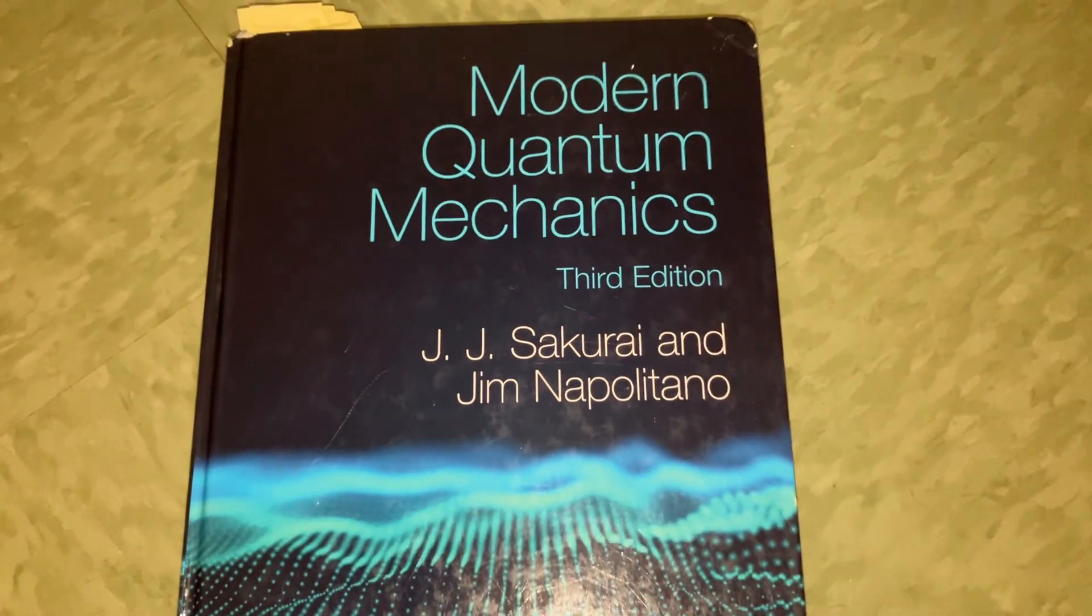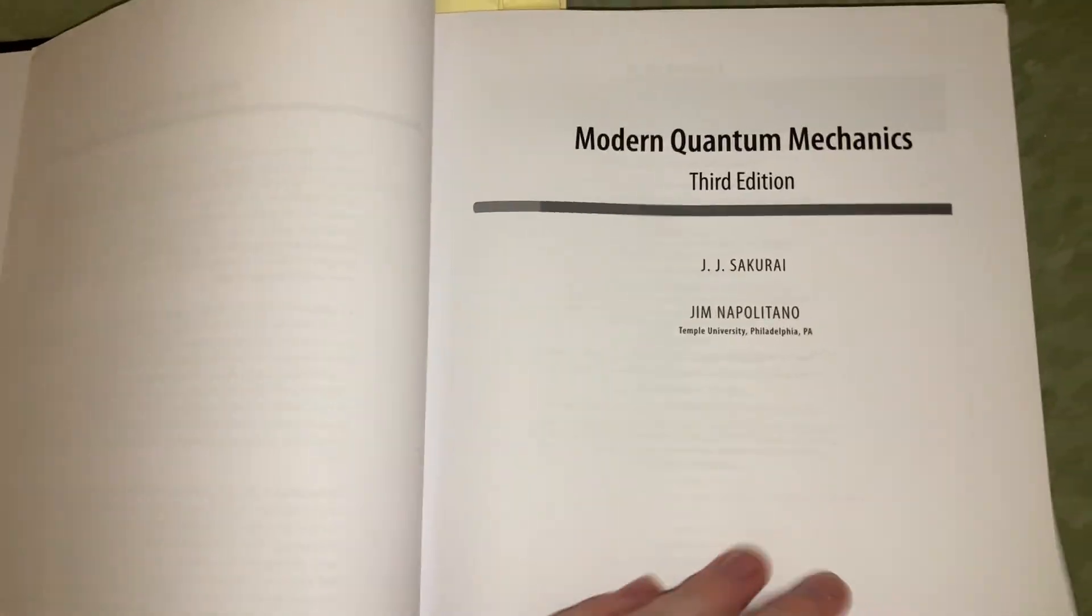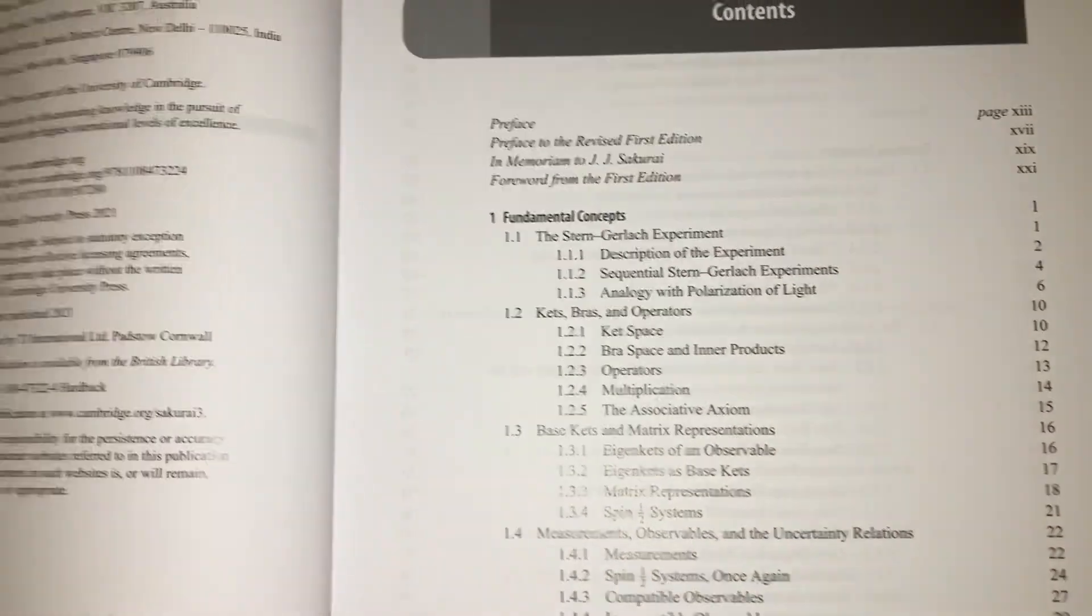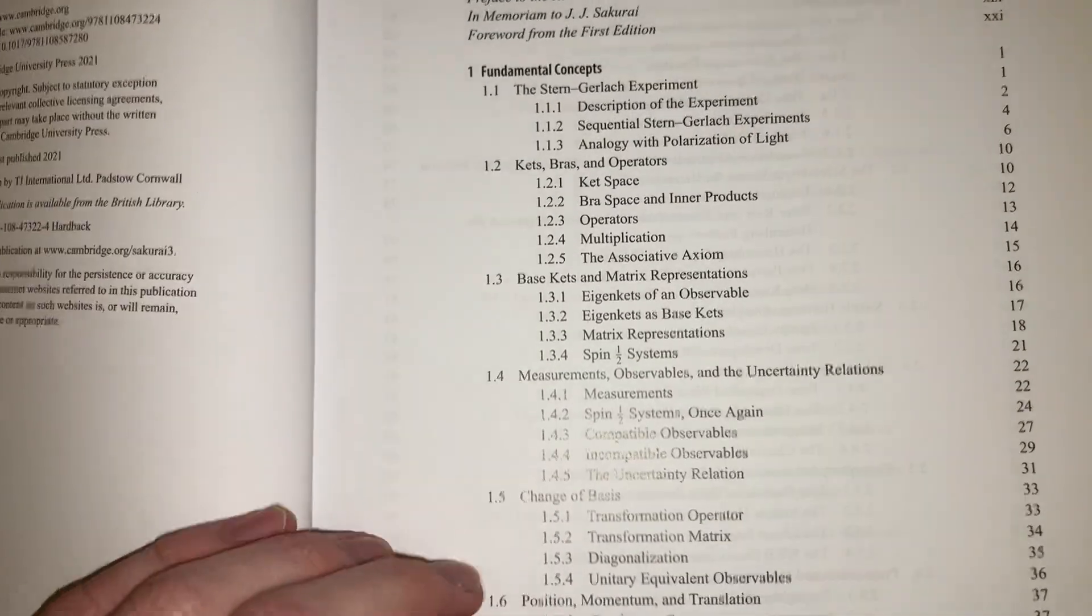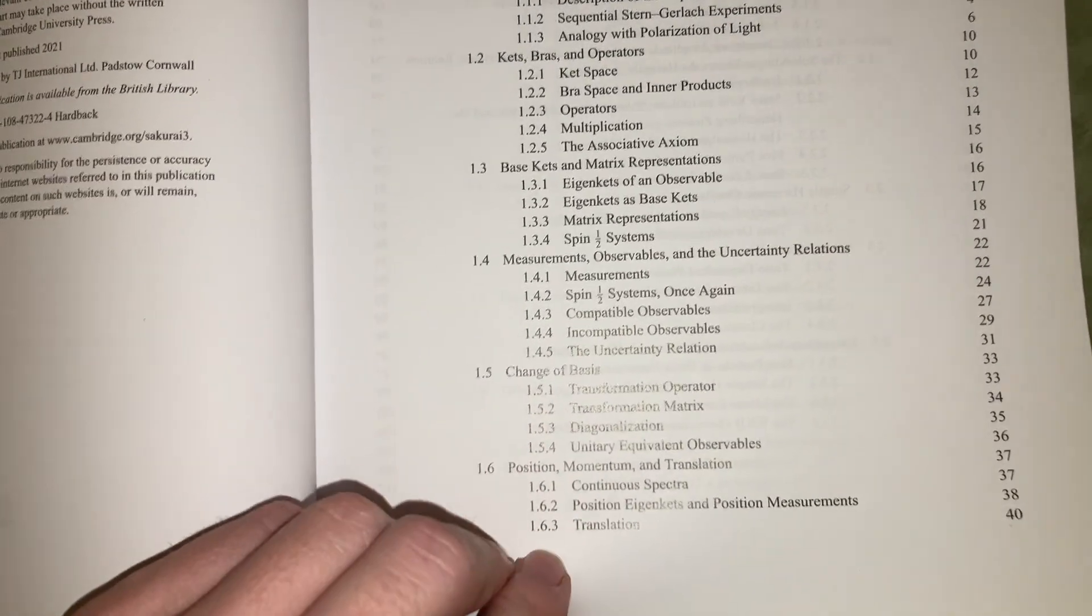So I found this amazing book on modern quantum mechanics. This is actually incredible. I was looking through the contents here, and we basically have the fundamental stuff. We have like kets and bra notation and stuff like that.